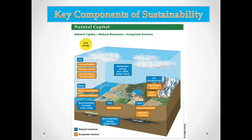Water purification is part of ecosystem services, as is wastewater treatment. Nowadays, companies and industries are required by law to treat their waste before releasing it to the environment. Factories that do not comply with wastewater treatment regulations can be closed by governing bodies. Those are examples of natural resources and ecosystem services that define natural capital — the first key component of sustainability.